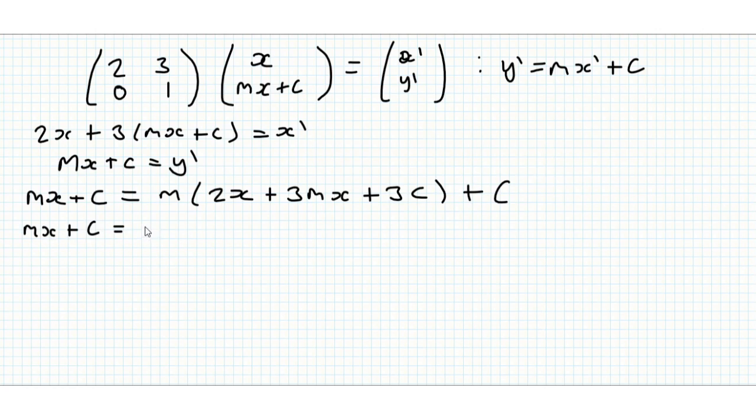We'll just simplify this a little bit, we'll get mx plus c, well multiplying the brackets is equal to 2m and then plus 3m squared x plus 3mc plus c. I just wanted to group the x and c terms so that when we compare coefficients that's easier.